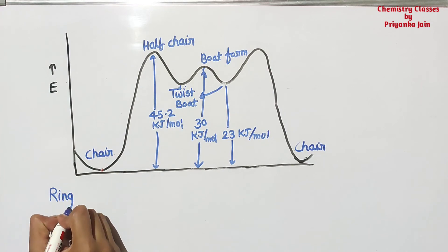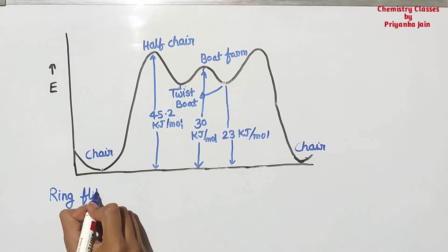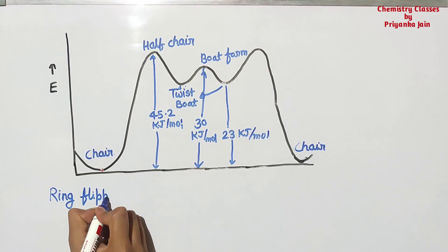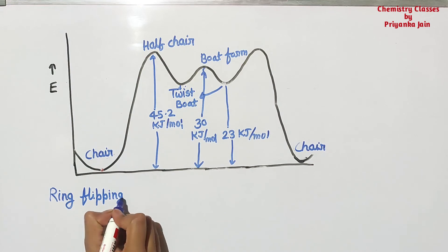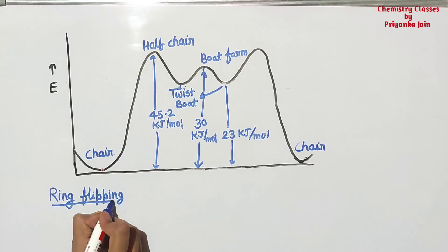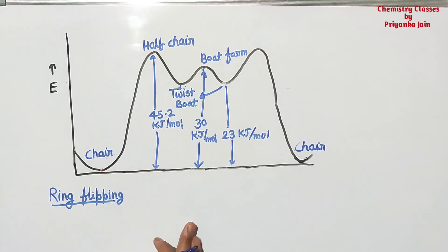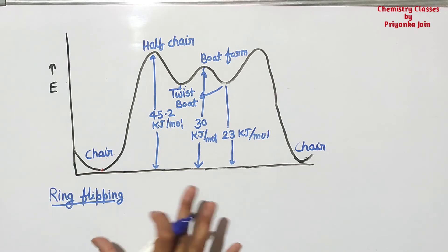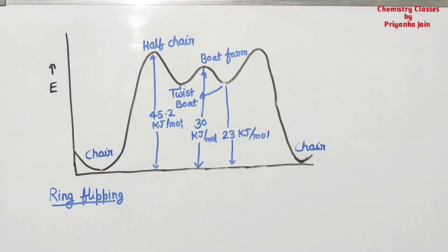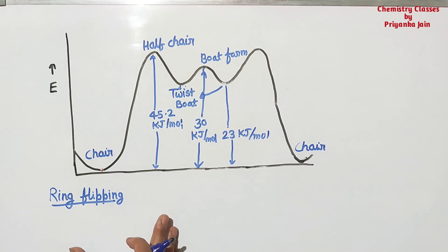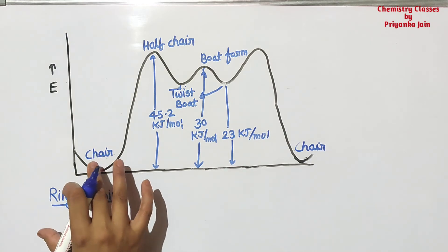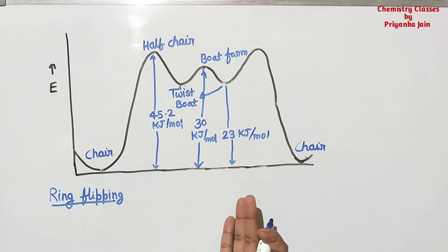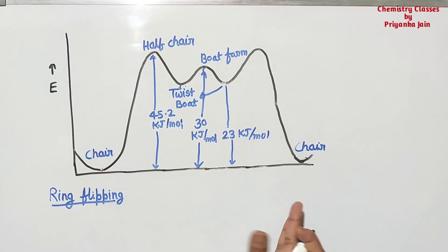There is one more important topic: ring flipping. The chair form exists in two forms that are mirror images of each other. At room temperature there is a quick flipping of the ring — one chair form can invert rapidly to another chair form that is the mirror image.